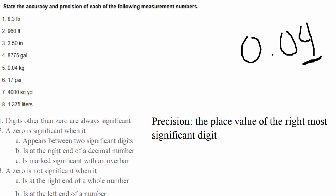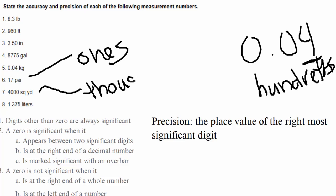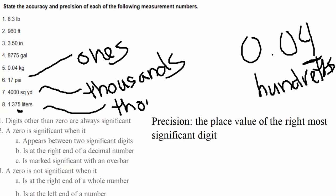For 0.04 kilograms, there was only one significant digit, and that digit is in the hundredths place, so it is precise to the nearest hundredths. For 17 psi, two significant digits — the right-most is the 7 in the ones place, so precise to the nearest ones or nearest psi. For 4000 square yards, the only significant digit was the 4, which is in the thousands place, so it is precise to the nearest thousands.